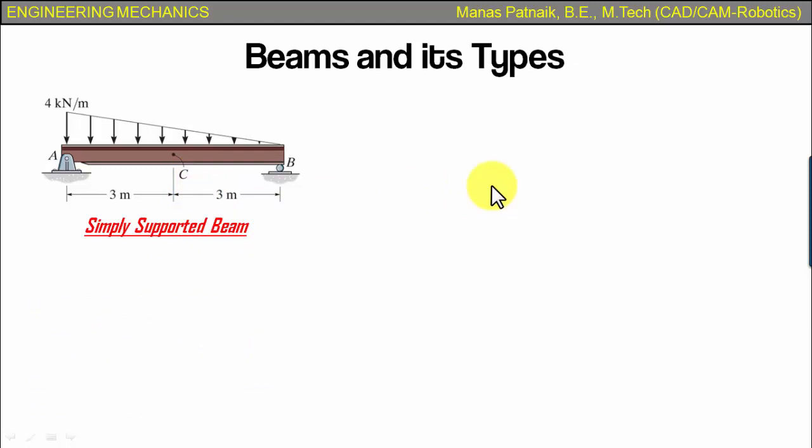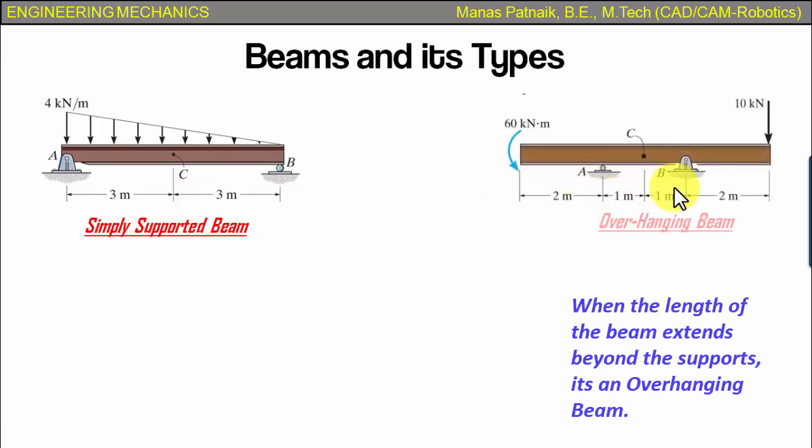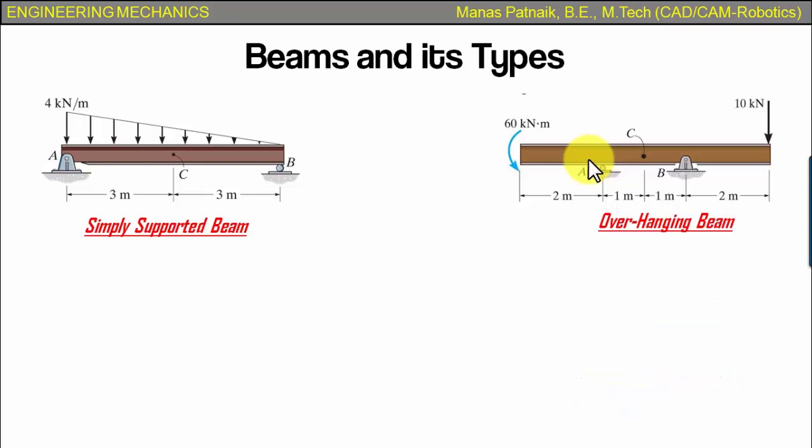Now let's have a look at another one. Here it is. If you watch carefully, this is what you call an overhanging beam. The definition says that if the length of the beam extends beyond the supports, that is beyond point B, since B is a support, so beyond point B there is this length. This is what you call an overhang. And beyond point A, that is towards the left of A, again we have an overhang. And this, essentially, is what you call an overhanging beam.